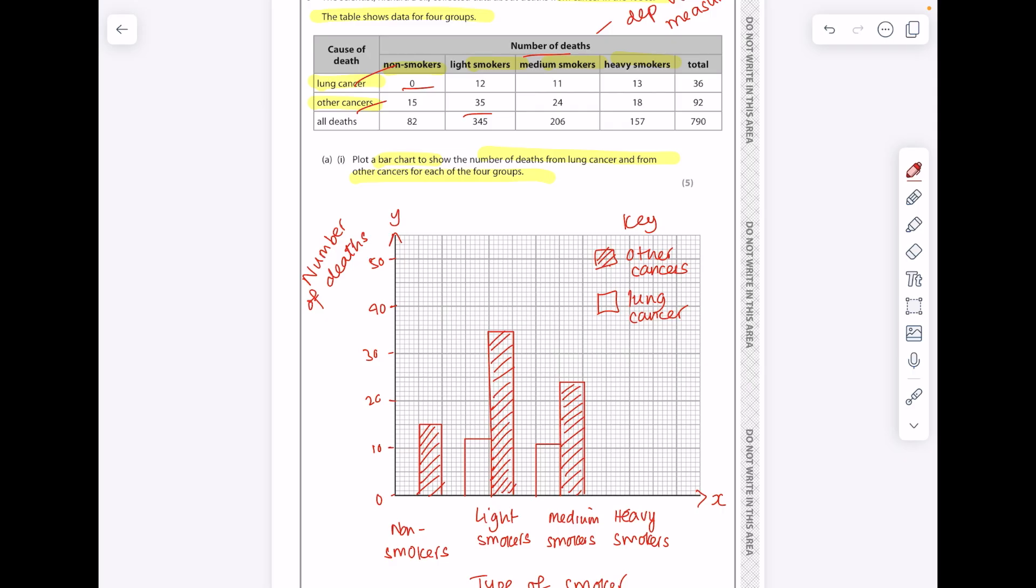Now heavy smokers, 13 got lung cancer and 18 got other cancers.